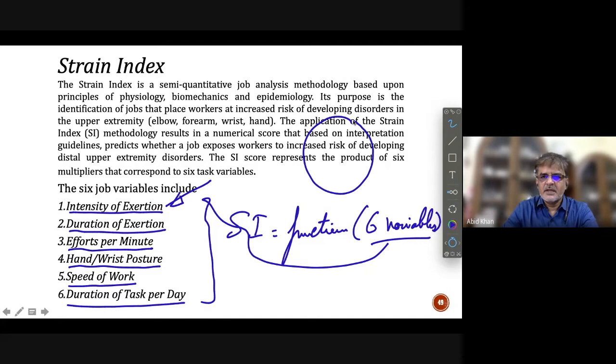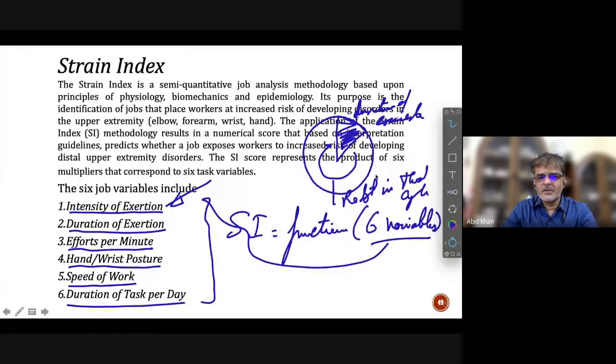In the clock, at one particular moment you start doing the task or pressing the task. For example, it is pressed. And after a while your hand takes rest. So this is your duration of exertion. And this is your rest in that particular cycle. So what is the duration of exertion? What are the efforts per minute? How many of these efforts are over a minute?